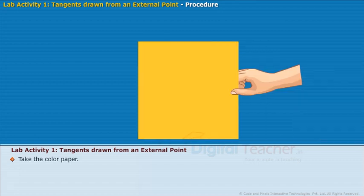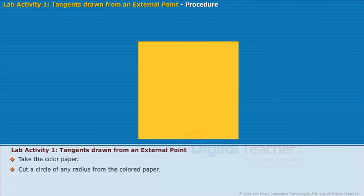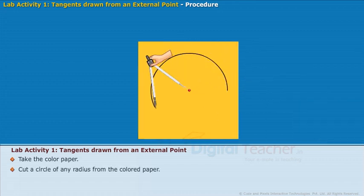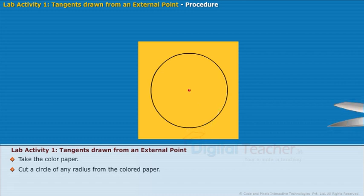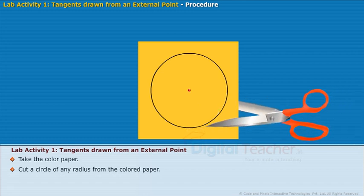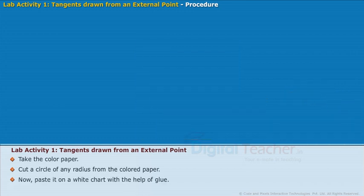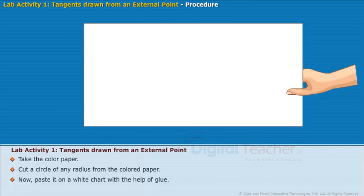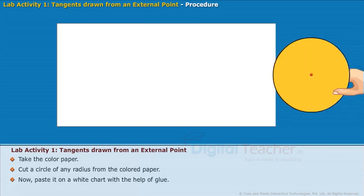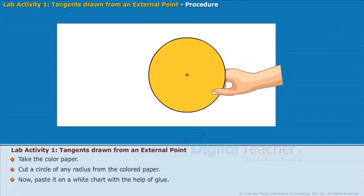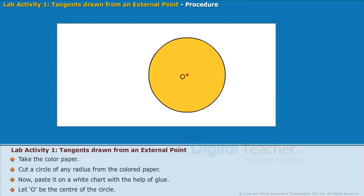Take the color paper. Cut a circle of any radius from the colored paper. Now, paste it on a white chart with the help of glue. Let O be the center of the circle.